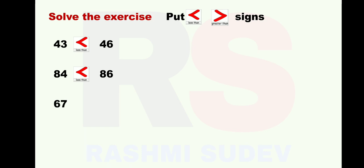Next sum: 67 and 57. Given numbers are 67 and 57. On the left hand side it is 67, on the right hand side it is 57. 67 is the greater number and 57 is the smaller number. Therefore we are going to put greater than sign, because 67 is the greater number. It is read as: 67 is greater than 57.